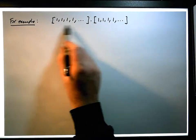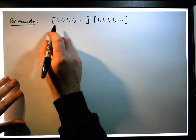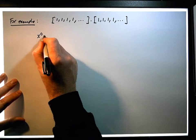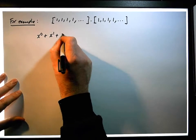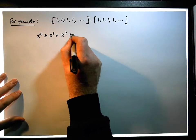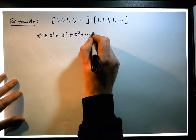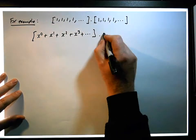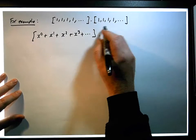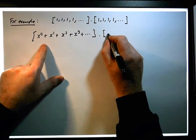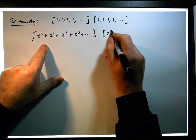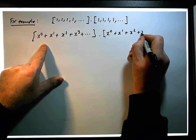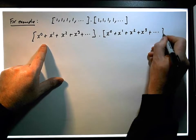This is a power series. Its power series is x to the 0 plus x to the 1 plus x to the 2 plus x to the 3 plus dot dot dot, which needs to be multiplied by the power series here, which is, once again, the same thing: x to the 0 plus x to the 1 plus x to the 2 plus x to the 3 plus dot dot dot.